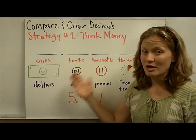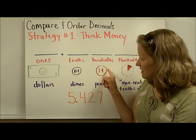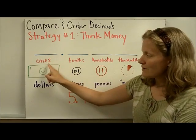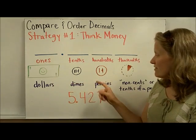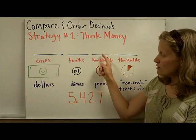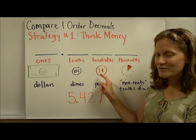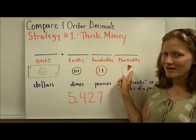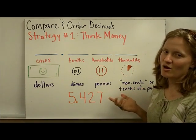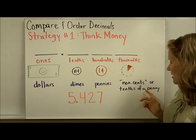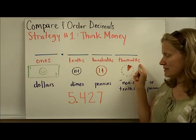If we take a dime and chop it into ten pieces, we would get a penny. That makes sense because it takes a hundred pennies to make a dollar, so a penny is one-hundredth of a dollar. And then if we took a penny and chopped it into ten pieces, we would have a tenth of a penny. That's not a real thing, so we're going to call it a 'nonsense' — that's our funny word for it in class. But really, a tenth of a penny is how you might represent the thousandths place in money.